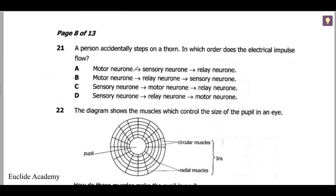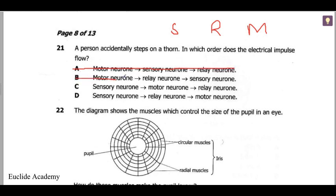We know that we have the sensory neuron and the motor neuron. We have the brain, the central nervous system, and the peripheral nervous system. A relay neuron connects these two together. Using elimination, we don't start with motor — we have to end with motor. So sensory comes first, then relay in between, which makes D the final answer.